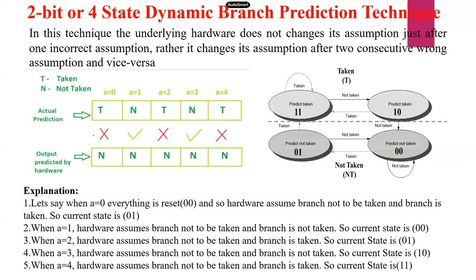The two-bit algorithm has states: 00, 01, 10, and 11. Here T is called taken, N is called not taken. State 00 means predict not taken. If it is correct, control retains the same state. If the prediction is wrong and a branch is taken, the control transfers from 00 to 01. State 01 is predict not taken — if prediction is not taken, control returns to previous state 00. If it is a taken branch, control transfers to 11, which is strongly taken. In case the prediction is incorrect, control moves to not taken. State 01 is also called likely to be taken.